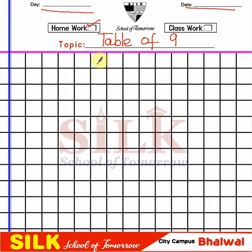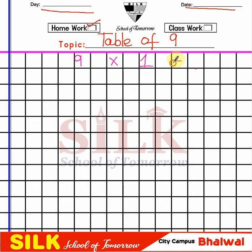Leave a margin and 2 or 3 blocks at the top of the line. We will start the table of 9. So let's start: 9 × 1 = 9. 9 × 2 = 18. You see — the table of 9. How do we get 18? I have told you to add the same number. 9 + 9 makes 18.